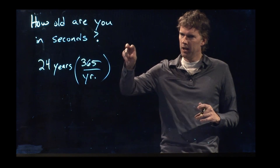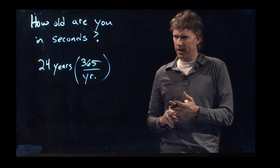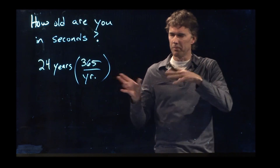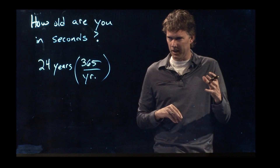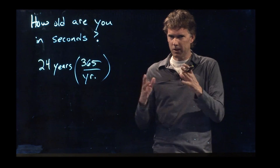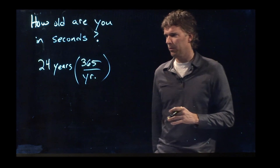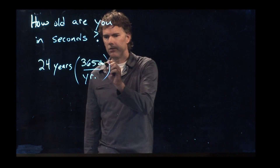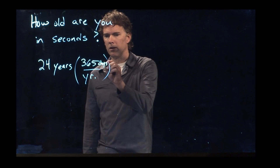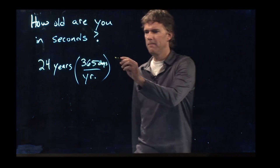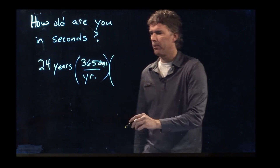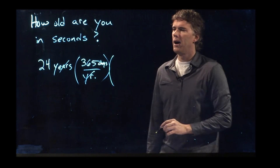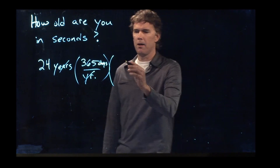So 365 days in a year — that's close enough. There are some digits after that. Every four years we have to add an extra day, every hundred years we have to do something else, every 400 years we have to do something else. We have to tweak the calendar a little bit. But 365 days in a year. Now we've gotten rid of years.